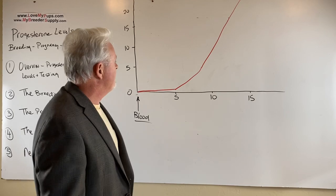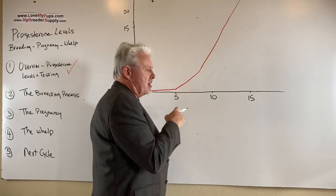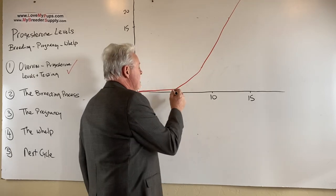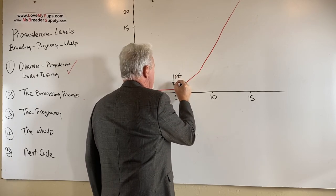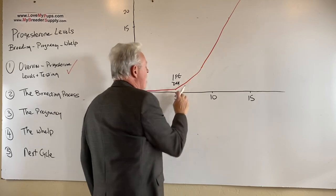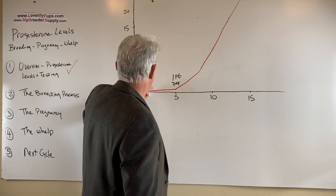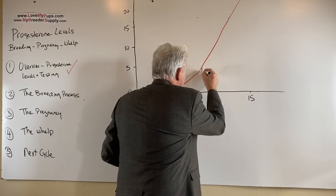All right, so then what happens? Well, progesterone level rises slowly, not very fast. It's sub one for typically about the first five days, and then it goes to this one point per day business, one point a day right here. It starts climbing. So after about four days, we're going to be at progesterone level. If we were one here, we'll be at a progesterone level of five.